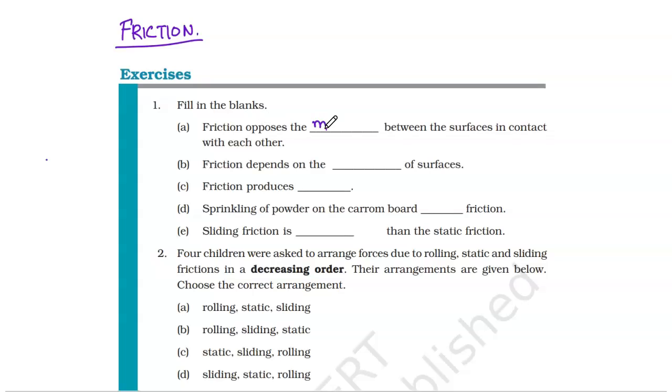Friction opposes the motion between the surfaces in contact with each other. If an object is moving on the right-hand side, friction force acts opposite to the motion. Friction depends on the nature of surfaces - greater the roughness, more will be the friction. Friction produces heat. Sprinkling of powder on the carrom board reduces friction.